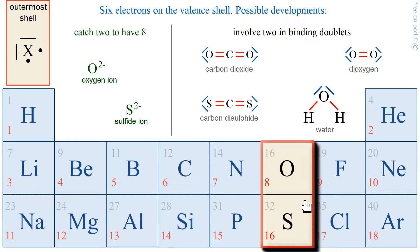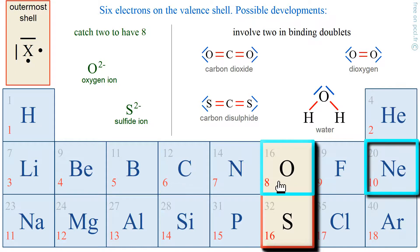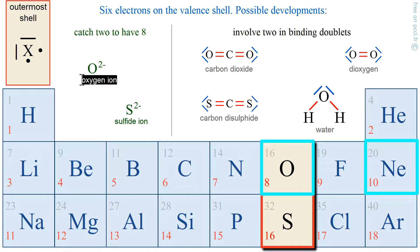Now we are looking at negative ions. Why would the oxygen ion be negative? If oxygen wants to have the electronic configuration of neon, it only has 8 electrons, but it needs 10, so it's missing 2. It's going to take 2 electrons from electron donors. Therefore the oxygen ion exists and is written O2-. The same applies to the sulfur ion, which also exists and has the formula S2-.